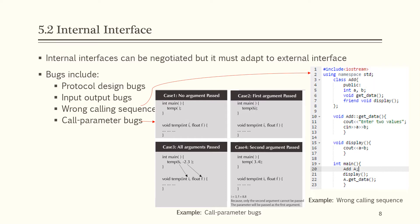Call parameter bugs: consider four cases where the function temp is called from the main function. In case 1, no argument is passed. In case 2, only the first argument is passed. In case 4, only the second argument is passed. All these cases are wrong. However, in case 3, both arguments are passed — this is the correct way to call the function.